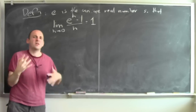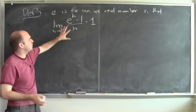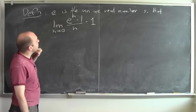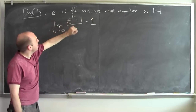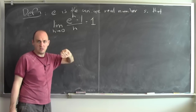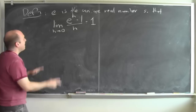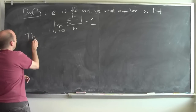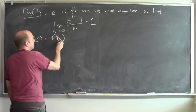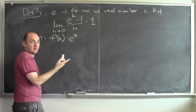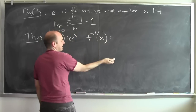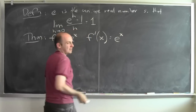We've already seen some heuristic argument as to why such a number should exist. So e is the unique real number so that the limit of e to the h minus 1 over h, as h goes to 0, is 1. Given this, I want to prove the following: if I've got a function f of x equals e to the x, then the derivative of f at x is also e to the x.